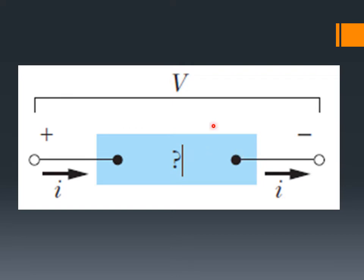When you apply this potential difference across the conductor, current flows. If you vary the potential difference, the current also changes. But what about the resistance? There are two possibilities: resistance may change, or it may not change.